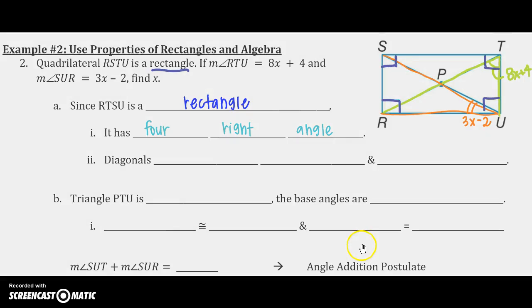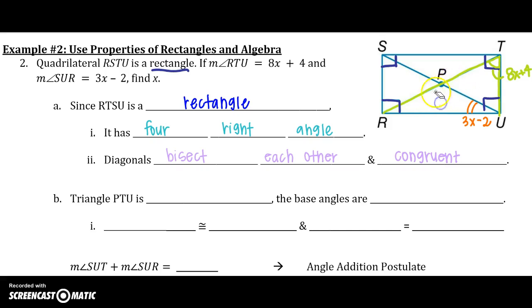But we also know that the diagonals bisect each other. So if I get all this color out of the way here, we know because they are congruent and they bisect each other, I know that SP is congruent to UP. I also know that RP is congruent to PT. So they are all congruent, but their parts are also congruent too.